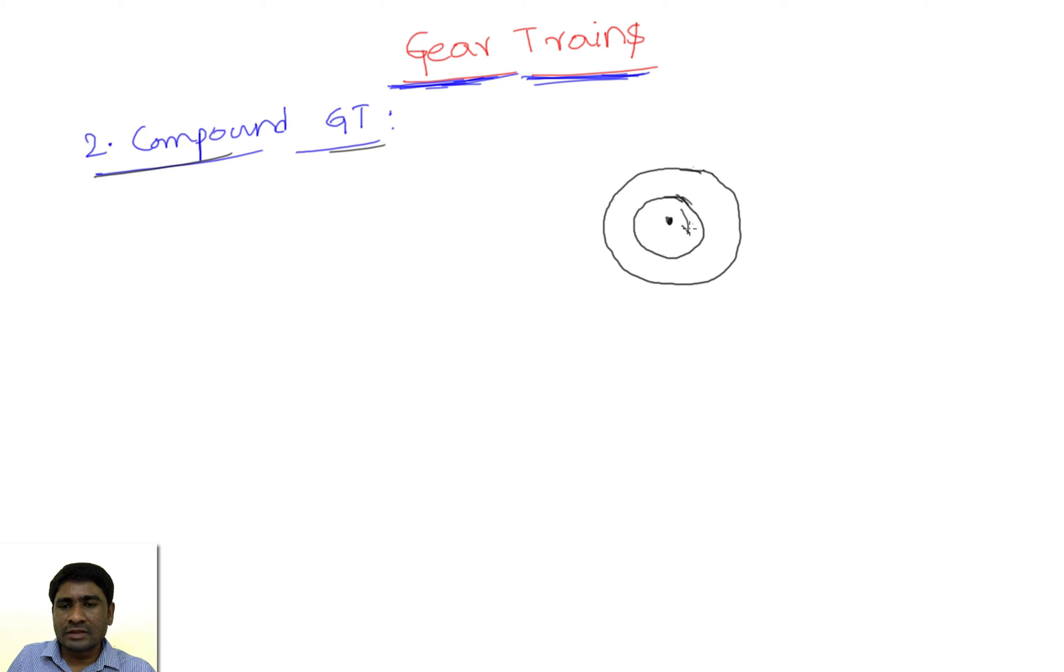These two gears will rotate with the same angular velocity as that of the shaft. The angular velocity of these two gears will become equal. Now, this is a fixed shaft.